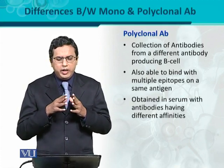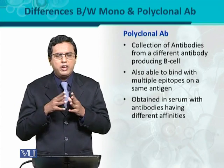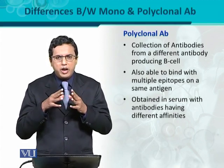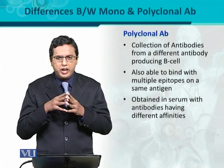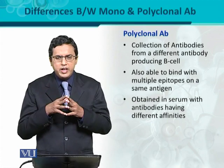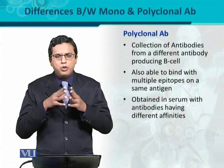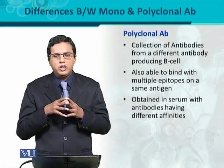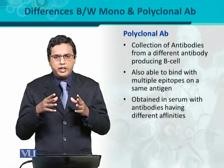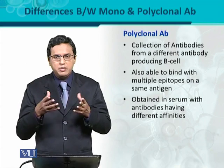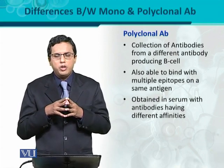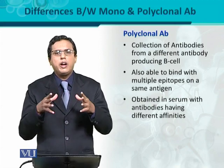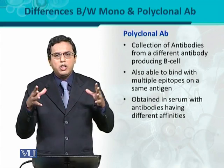Polyclonal antibodies are obtained in serum as antibodies having different affinities. Those polyclonal antibodies present in a serum are in a pool form, and within that pool some antibodies have different affinities — meaning polyclonal antibodies in the same serum can have different affinities. This is a very important attribute of polyclonal antibodies in contrast to monoclonal antibodies, where the antibodies all share the same affinity for the same single unique epitope.